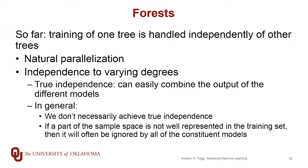And if we can achieve that statistical independence, it becomes really easy for us to combine the outputs of the different models. So if we're talking about classifiers, we're using a voting method. If we're talking about regression, we're taking an average across the outputs of the individual models.